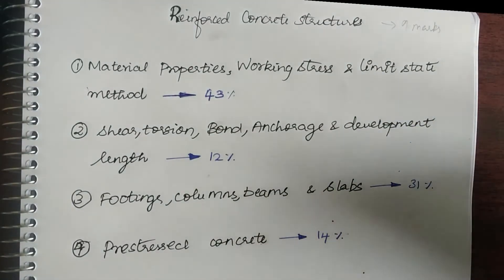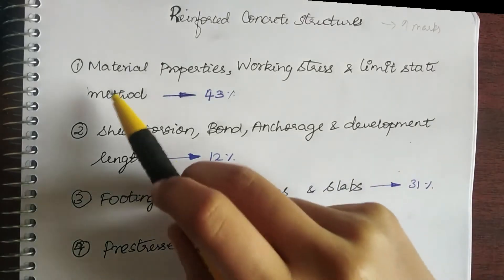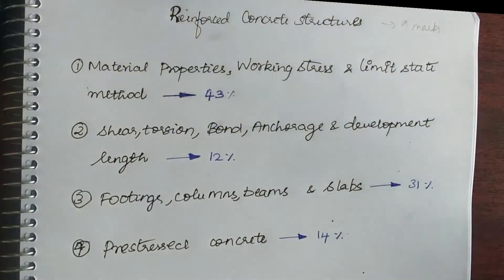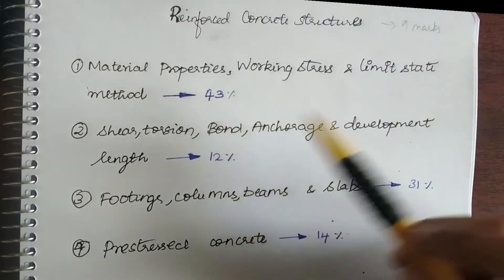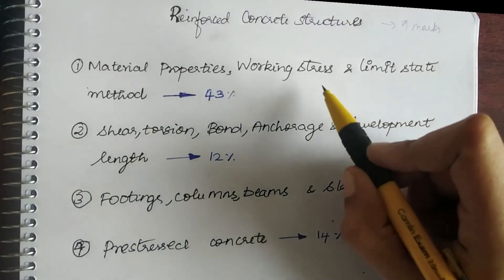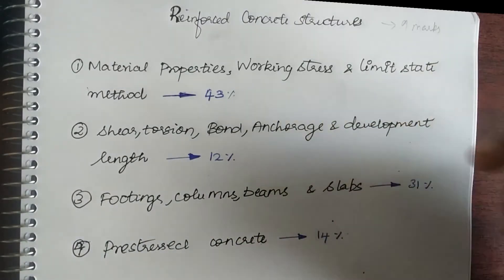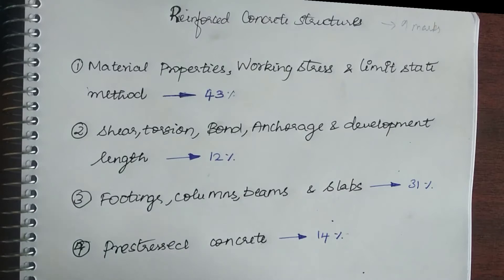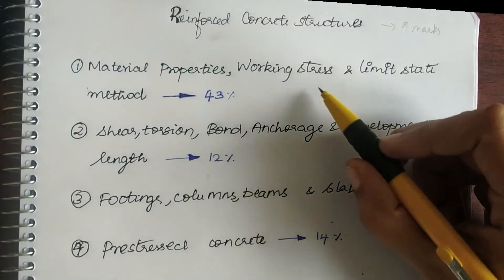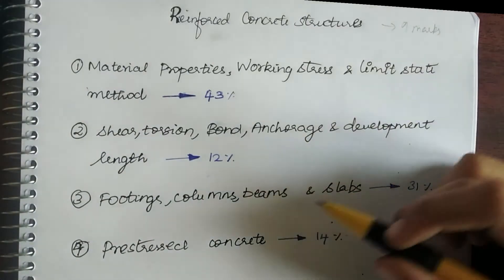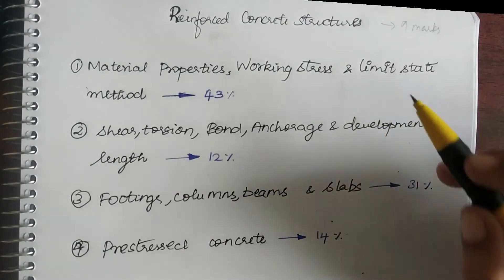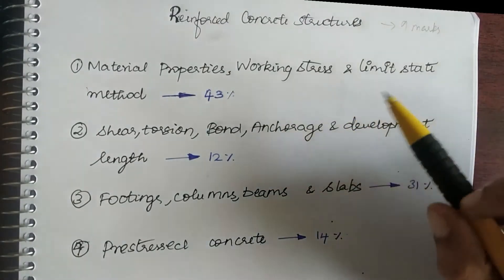The first one being material properties, working stress, and limit state method. Material properties means your simple concrete technology that is going to give you marks. Next is working stress and limit state method. Mind you, they are not going to ask you problems, they are just going to ask you only the concepts. Working stress and limit state method concepts are very easy. You don't have to learn the working stress and limit state method design of beams and all, you just have to learn the concept, that's it.